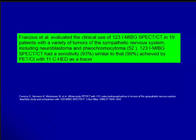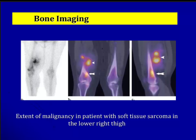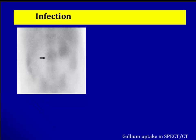Some bone imaging examples: looking at planar images of an osteosarcoma, you see a lesion but don't know if it's soft tissue, anterior skin, or something else. SPECT-CT clearly defines it as a metastasis at the femoral metadiaphyseal junction. For infections, on planar imaging you may see asymmetry in the spine but not know exactly where. SPECT-CT improves sensitivity for lesion detectability and localizes the abnormality precisely.